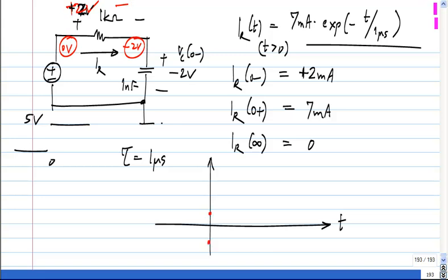What happens is IR, which is plus 2 milliamps just before t equal to zero, will jump to 7 and then decay to zero. That's what it will look like.